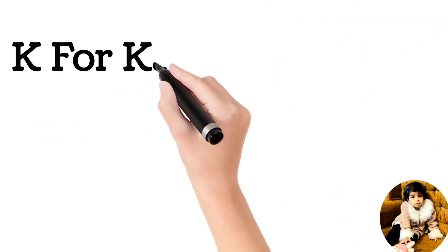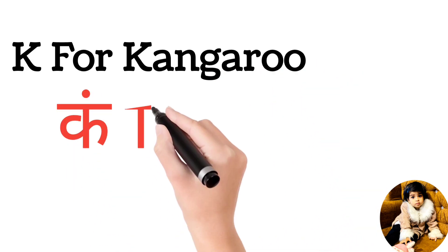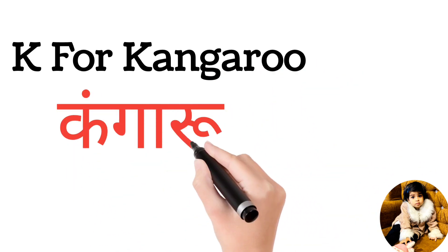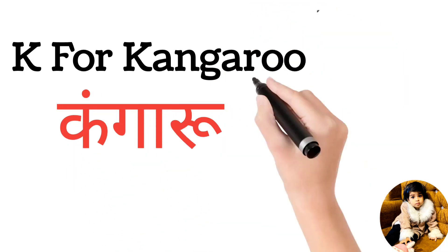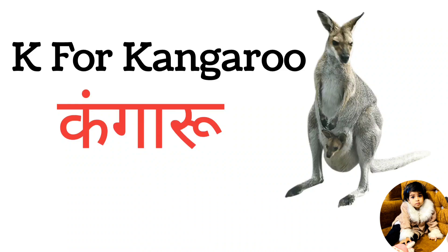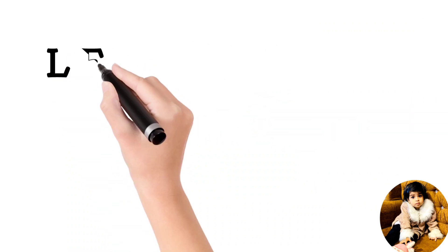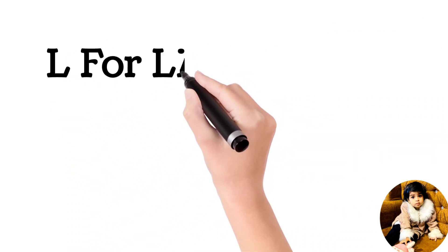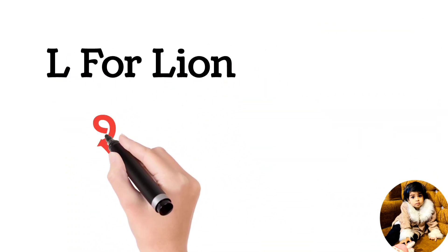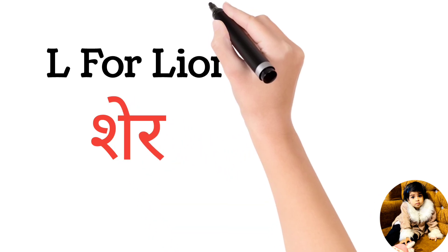K for kangaroo, kangaroo means kangaroo. L for lion, lion means seer.